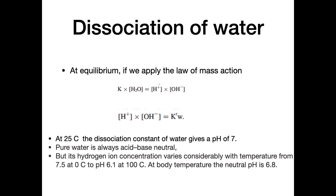The hydrogen ion concentration varies considerably with temperature. At 0°C the neutral pH is 7.5, at 100°C it is 6.1, while at normal body temperature the neutral pH is 6.8.